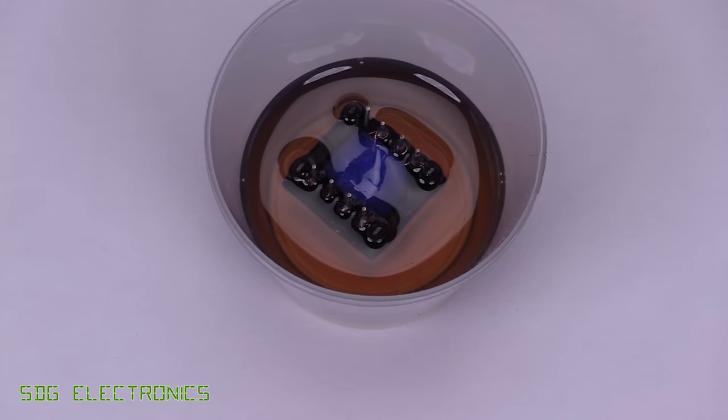So you might be able to see the odd bubble coming out. Interestingly, the instructions say, don't vacuum impregnate. So although we've got a vacuum chamber that we could get it into every gap in the transformer, it tells us not to do that. So we'll leave it in here just for the bubbles to dissipate, and then we'll leave it to dry.